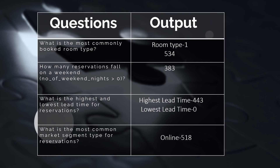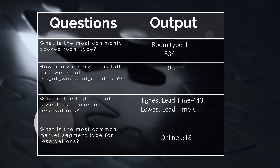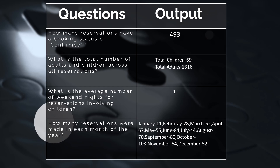Question 5 — most commonly booked room type: answer is Room Type 1 with 534. Question 6 — reservations falling on a weekend where number of weekend nights is greater than 0: answer is 383. Question 7 — highest and lowest lead time for reservations: highest lead time is 443, lowest lead time is 0. Question 8 — most common market segment type for all reservations: answer is Online with 518.